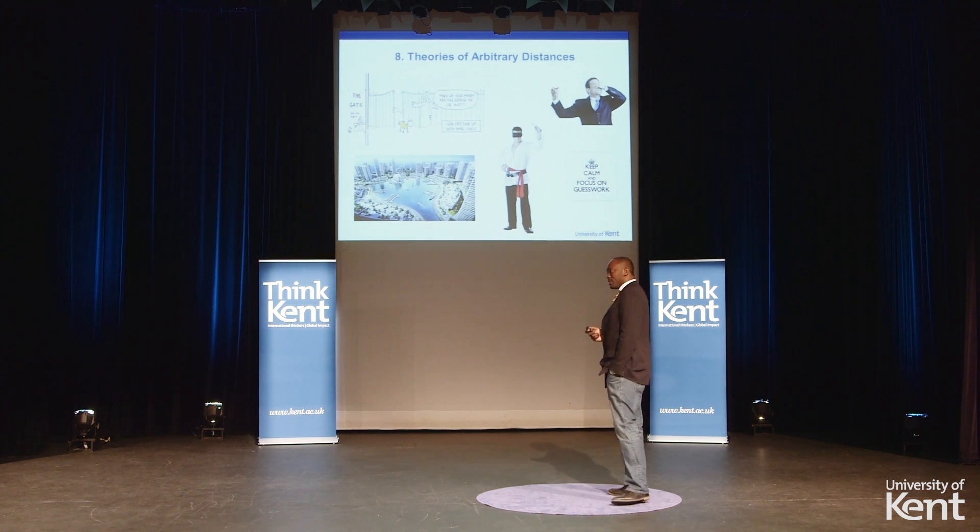Hence we can look at the theory of arbitrary distances. The theory of arbitrary distances simply adopts the proposition that we can arbitrarily decide where airspace ends and where outer space begins. Suggestions have ranged between a few meters above the tallest building in cities, to 30,000 miles, to 1,500,000 miles away from the Earth. It belongs entirely to the imagination of the person thinking of the solution.